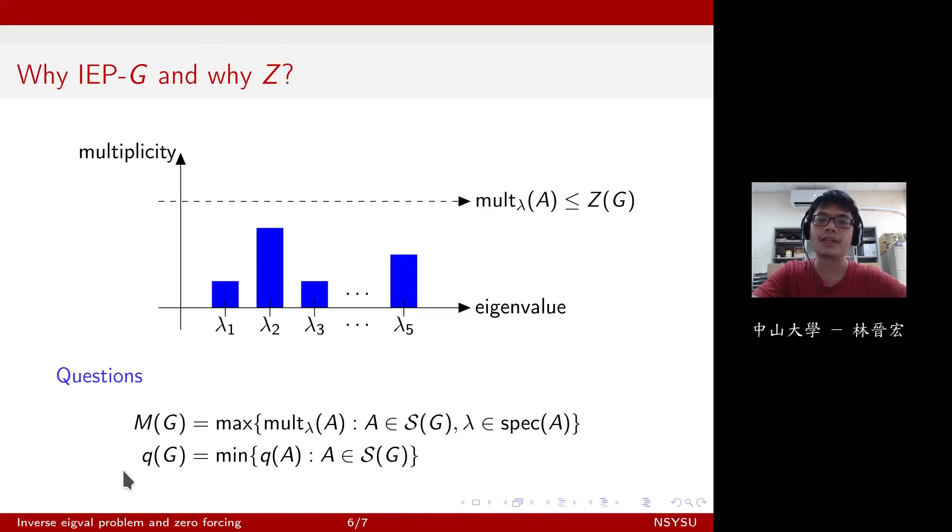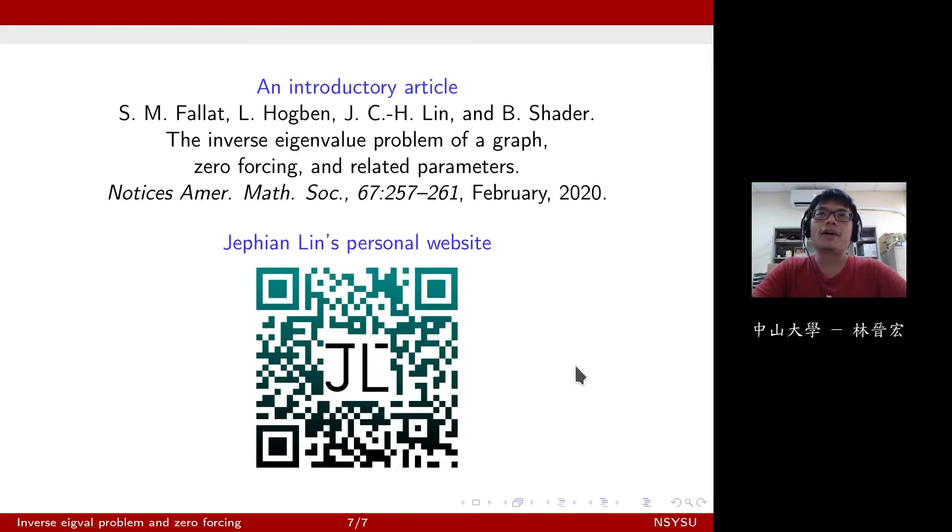Even for trees, there's no general strategy to find out Q of G. So if you are interested in these topics, then here is an introductory article that is published in Notices of American Mathematical Society. And if you are interested in my research, you can scan the QR code on the screen. So thank you very much.